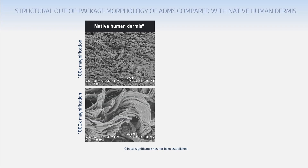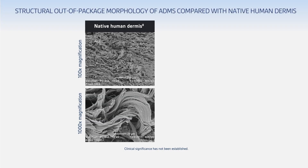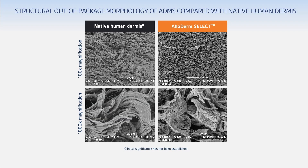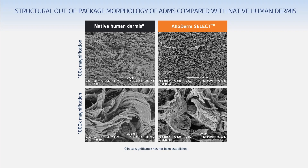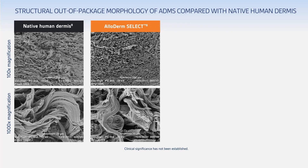We can see the effects of various types of processing by looking at the structure of different ADMs under a scanning electron microscope. The images in the first two columns show similar morphology between native human dermis and Alloderm. Native fibrillar collagen is evident throughout, indicating that the original dermal architecture has been maintained.